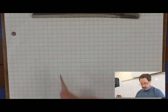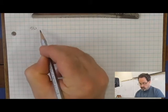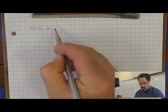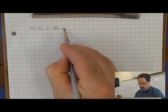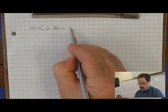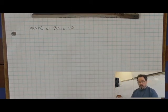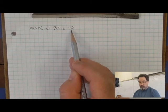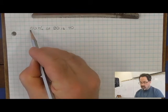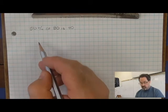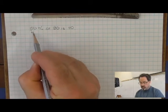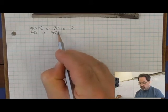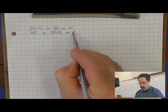For example, this statement combines numbers and language to communicate a concept. I've written 50% of 80 is 40. I can write the same related numbers and concept, but in a different order. 40 is 50% of 80.